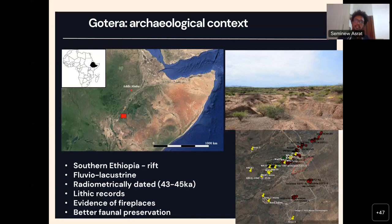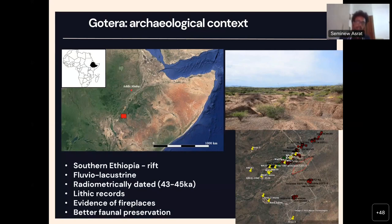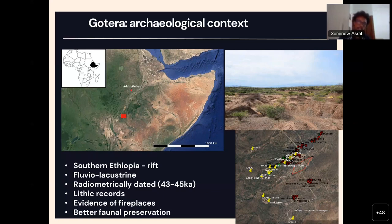My study area is in Gotera. Gotera is a site situated in Southern Ethiopia, not far from Kenya. And as a community-bearing site is Kogifora and Turkana region, Omo area. It's about 25 kilometres to the north of the Juba area and 500 kilometres to the south of the capital, Addis Ababa. It is situated inside the rift zone of the East African rift system and the sediment is full of lacustrine deposits. The site is currently dated back to 43 to 45,000 years ago.